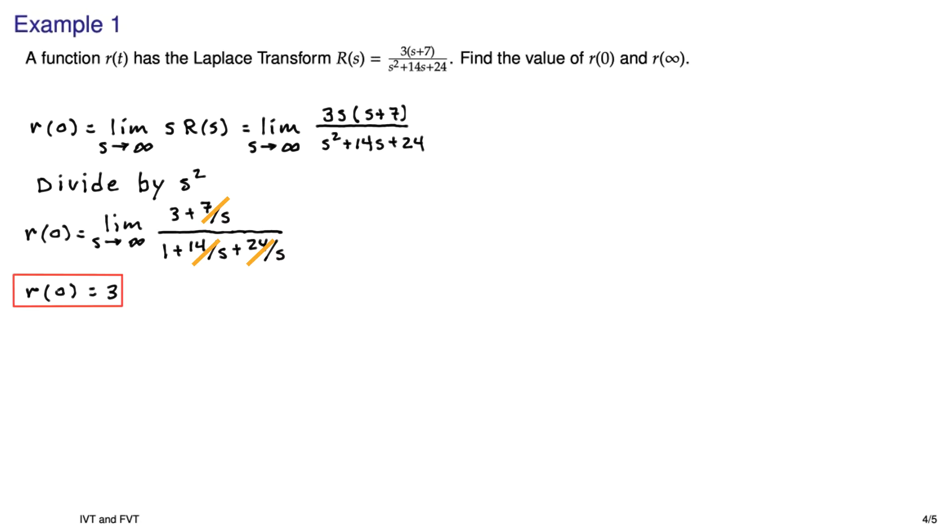And you're just left with three. So when we plot this function, if we put R(s) into MATLAB and then take the inverse Laplace transform of it to get r(t) and we plot it, we should see the initial value of this at three.